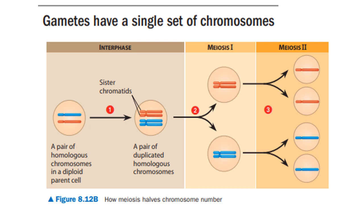All sexual life cycles involve an alternation of diploid and haploid stages, producing haploid gametes, which prevents the chromosome number from doubling every generation. Gametes are made by a special sort of cell division called meiosis, which occurs only in reproductive organs like ovaries and testes. Whereas mitosis produces daughter cells with the same number of chromosomes as the parent cell, meiosis reduces the number by half. Each chromosome is duplicated during interphase before meiosis.